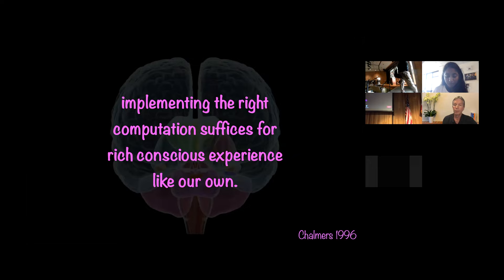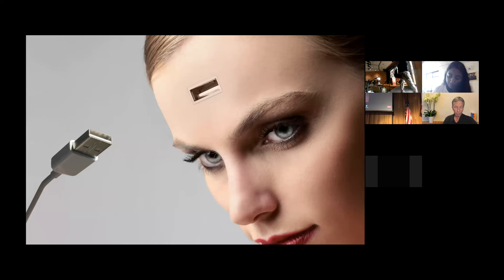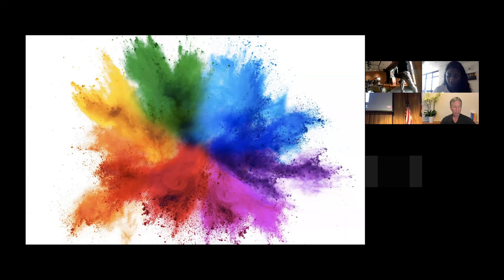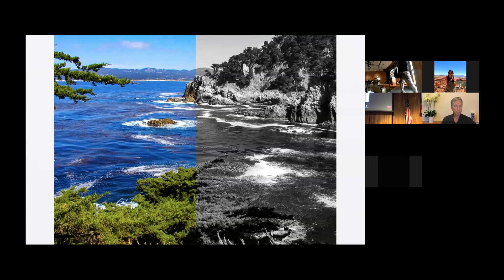Implementing the right computation suffices for rich conscious experiences like our own. If we understand how physical systems with the right complexity can generate our conscious experiences, we should be able to figure out that function, that program, and perhaps download it — download our consciousness and maybe even have immortality. So our rich world of conscious experiences, such as the rich experience of color you might be having right now, is from this framework of physicalism and reductionism to be explained as the result of some complicated function of physical objects in space-time.